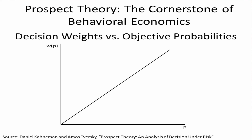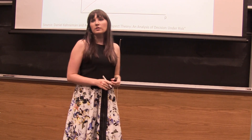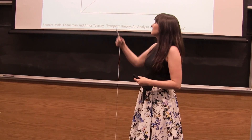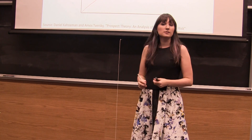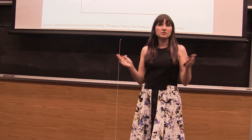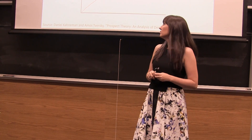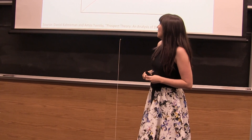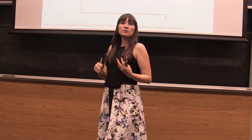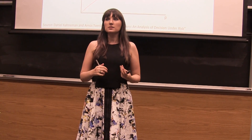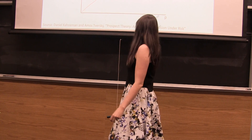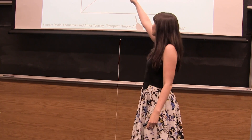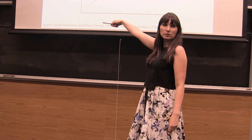The prospect theory paper uses pi of P — those are the same thing. So we can think about: if people were rational beings, the mapping from objective probability to a decision weight would just be this 45-degree line. But we can take everything we just talked about and ask what this mapping would look like given the phenomena we just described.